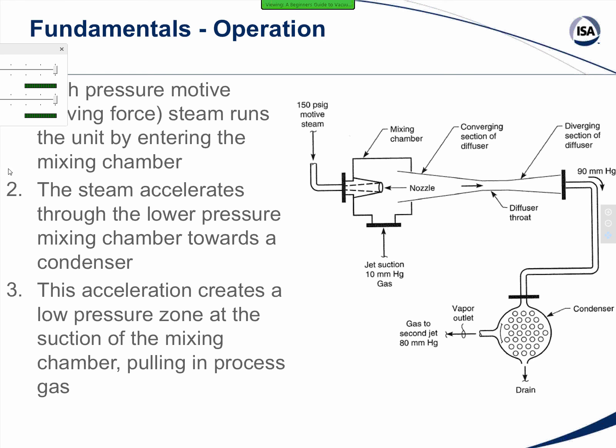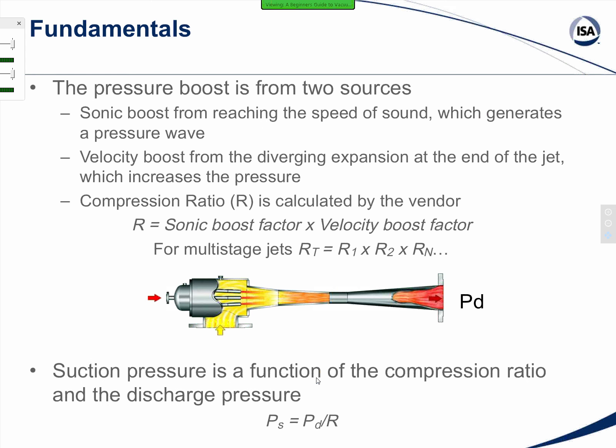The way a steam jet ejector works is by creating a low pressure area inside the jet that suctions gas from the targeted vessel. First, you inject high pressure steam, which is also called motive steam in most applications, into an entry mixing chamber shown here. The steam is going to accelerate through the converging and then diverging throat of the jet towards the condenser. The acceleration of gas creates a low pressure zone, very similar to how a low pressure zone is developed by air running over the top of an aircraft wing, which is what's actually creating the lift on that wing. The force from this low pressure zone can be very significant, allowing you to reach some pretty high vacuum levels, or low pressure levels.